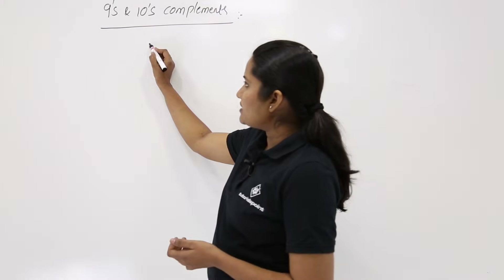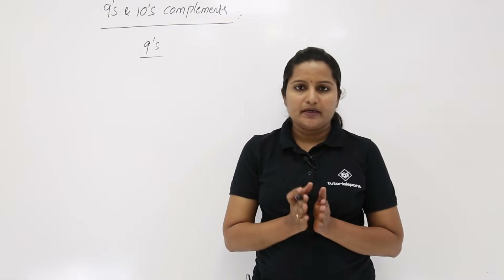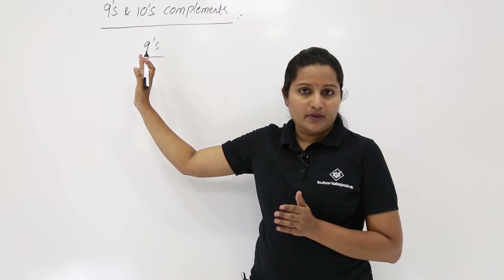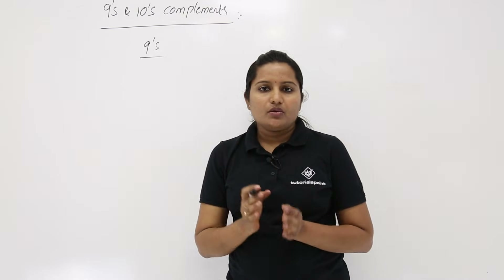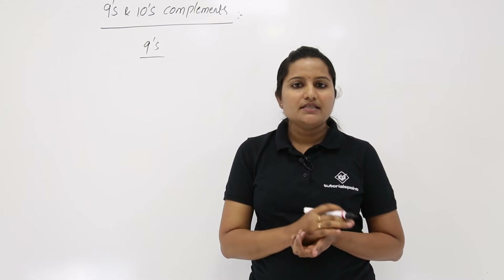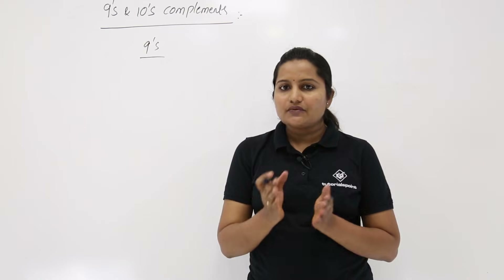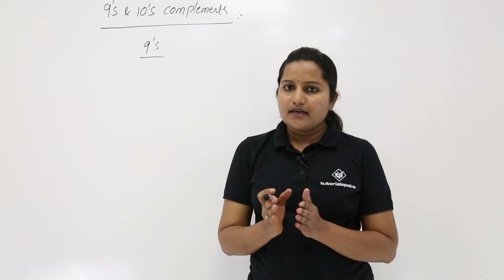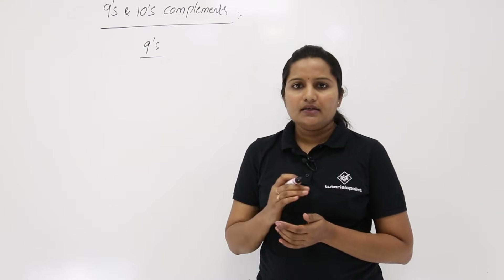First of all we will discuss about 9s complement. What is meant by 9s complement? This is also an odd complement, like 1s and 15s complement. The 9s complement of any number can be obtained by subtracting each and every digit of that decimal number from 9, the same as we do in 15s complement.